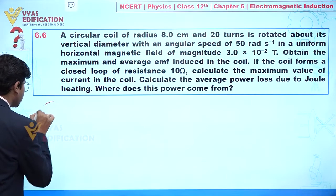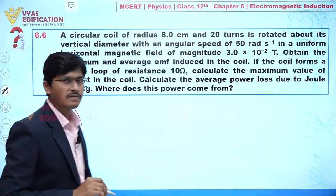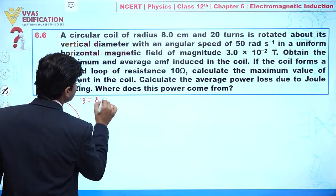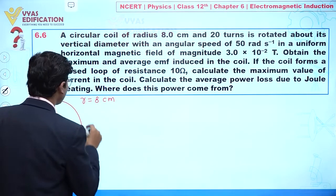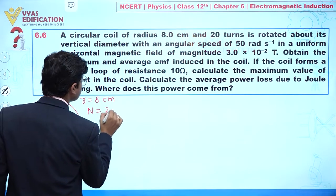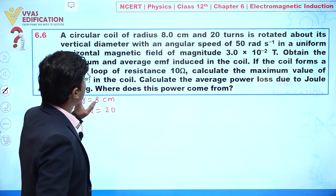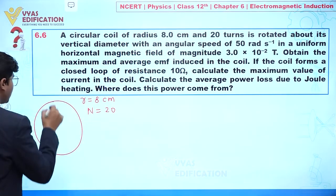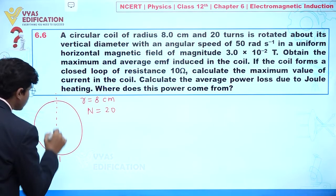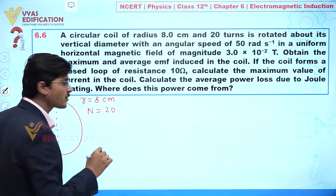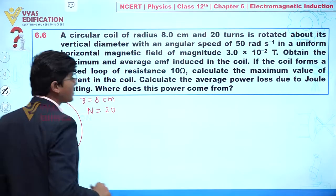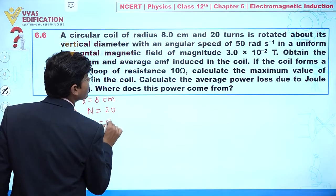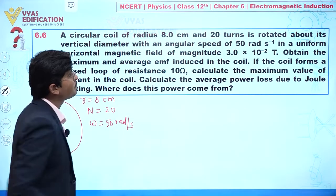We have a circular coil — let's draw it. The radius R is 8 centimeters and the number of turns is 20. It is rotated about its vertical diameter, so this is the diameter and this is the axis along that diameter. The angular velocity omega is 50 radians per second.